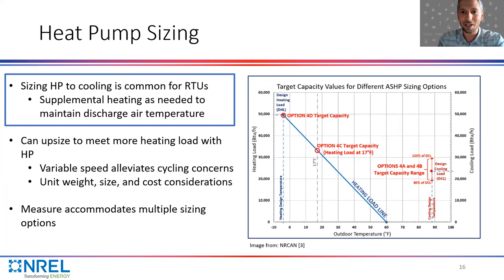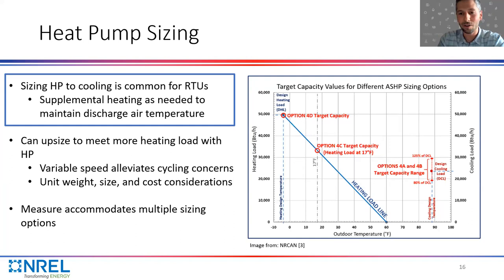Concerns with upsizing include increased unit weight — I've heard anecdotal concerns from building owners about that. If you upsize too much, you might need a larger cabinet size with a different footprint, and obviously there are cost considerations. The measure allows multiple sizing options, sizing to different temperatures. But the results I'll be showing are for sizing to cooling, which from feedback from Daikin and MEP firms is the most common approach.